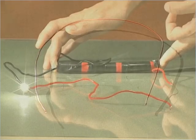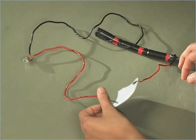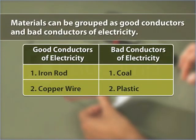On repeating the same activity with copper wire, you will see that the bulb glows. On the other hand, when the piece of plastic is connected between the open ends of wire, the bulb does not glow.